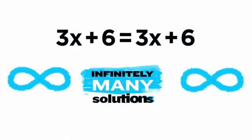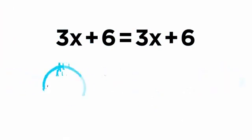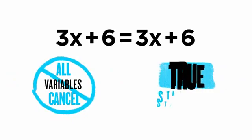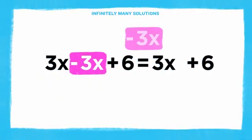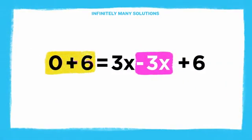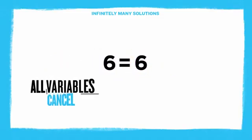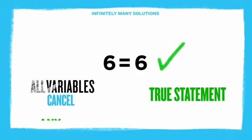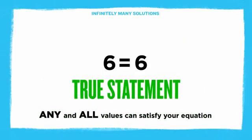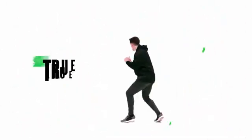When you have infinitely many solutions, all your variables cancel and you're left with a true statement. Any and all values can satisfy your equation — infinitely many solutions. True statement means infinitely many.